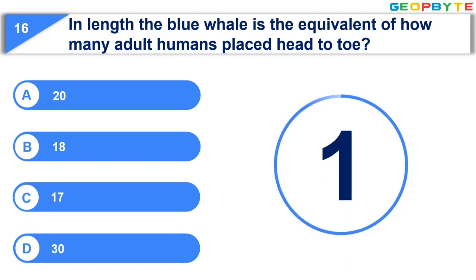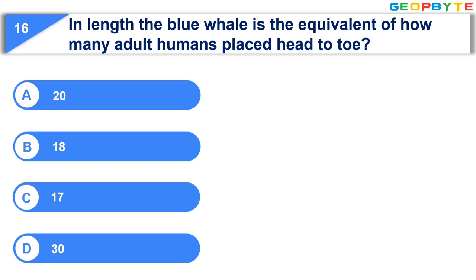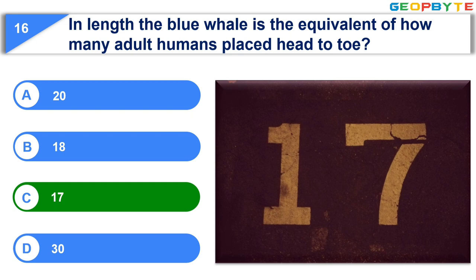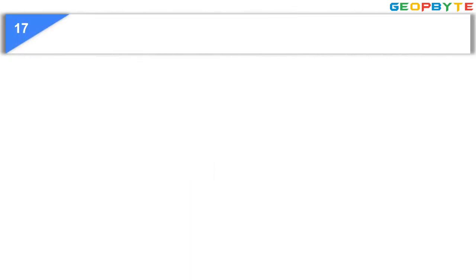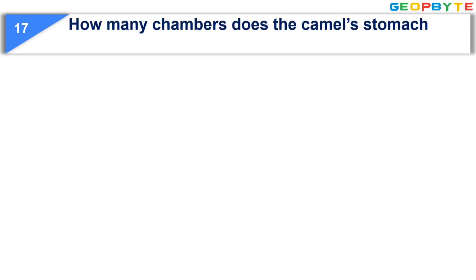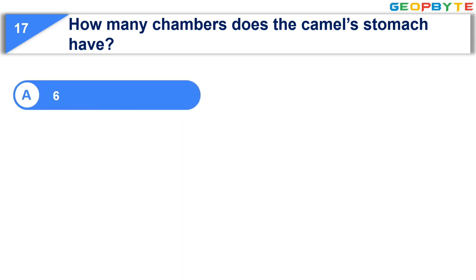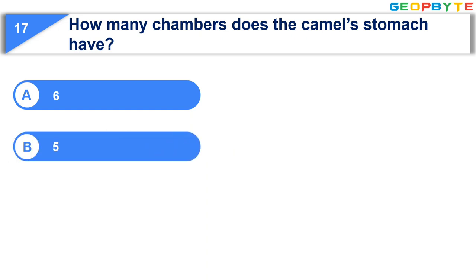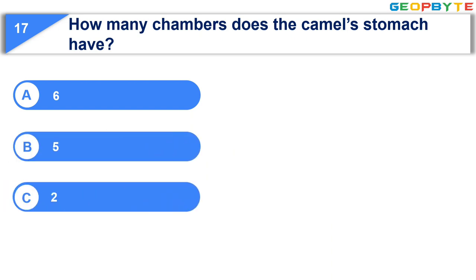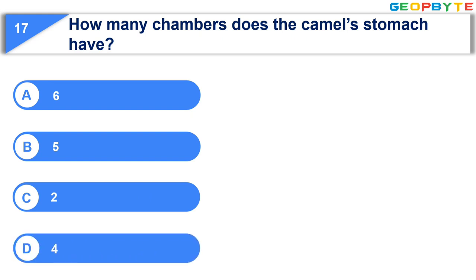Your time is up and the correct answer is Option C: 17. Moving to the seventeenth question: How many chambers does the camel's stomach have? Option A: 6. Option B: 5. Option C: 2. Option D: 4. Your time starts now.